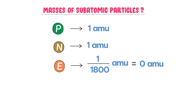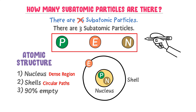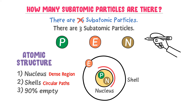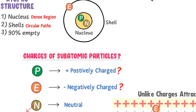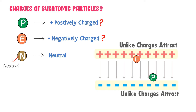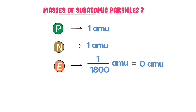To summarize: there are three subatomic particles — proton, electron, and neutron. Protons and neutrons stay in the nucleus, while electrons revolve around the nucleus in fixed circular paths called shells or energy levels. Proton is positively charged, electron is negatively charged, and neutron is a neutral particle. The mass of a proton is 1 atomic mass unit, the mass of a neutron is also 1 atomic mass unit, and the mass of an electron is approximately 0 atomic mass unit.